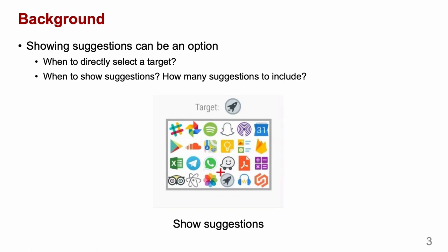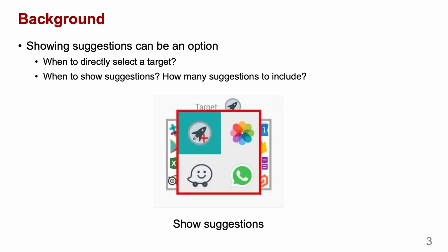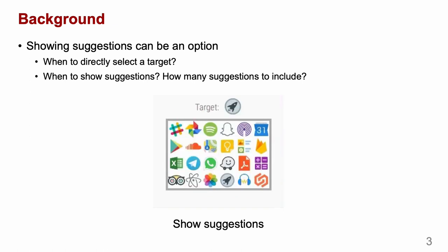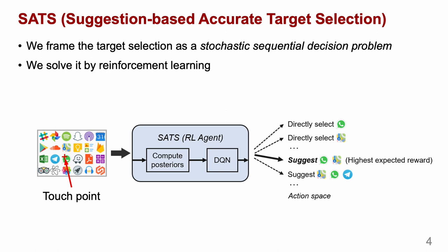For triggering suggestions, we also need to decide which candidates to suggest. In this paper, we propose SETS, a suggestion-based accurate target selection method. We assume that the user will repeat the selection until the intended target is selected. Then the problem can be formulated as a stochastic sequential decision problem, and we use reinforcement learning to solve it.